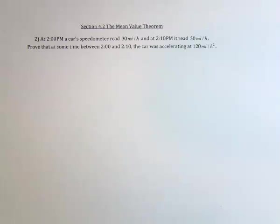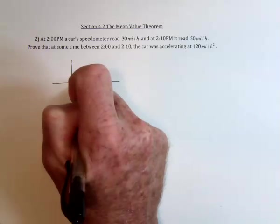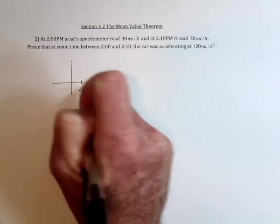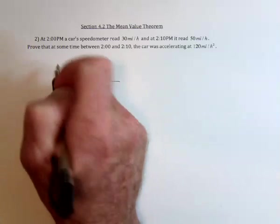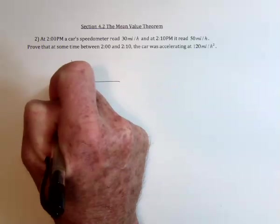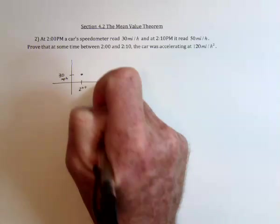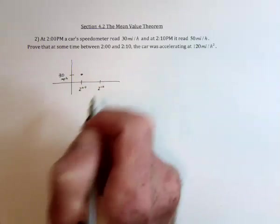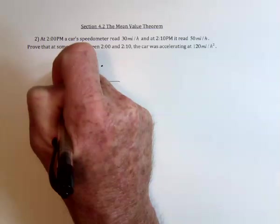So it would actually help to take a little look at a sketch. We've got the time 2 o'clock, and this car says that it's going 30 miles per hour. And then we've got at 10 minutes later, to 2:10, it's going 50 miles per hour.